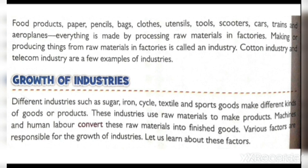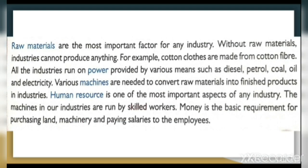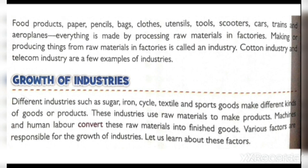Food products, paper, pencil, bags, cloths, utensils, tools, scooters, cars, trains and aeroplanes — everything is made by processing raw materials in factories. Making or producing things from raw materials in factories is called an industry. Cotton industry and telecom industry are a few examples. Different industries such as sugar, iron, cycle, textile and sports goods make different kinds of goods. Machines and human labor convert raw materials into finished goods. Various factors are responsible for the growth of industries.